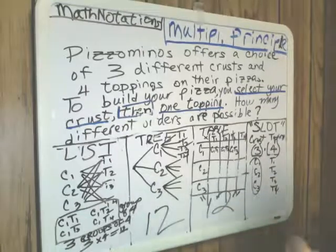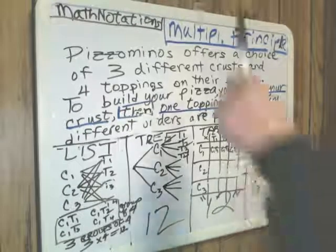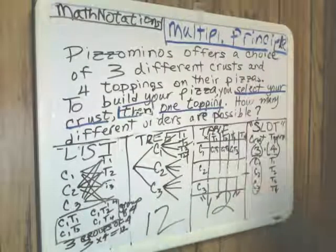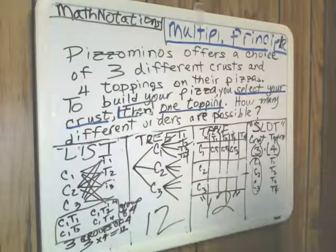I'm not going to write it out formally or tell you the most general form, which involves n events, but this gives you the basic idea. Visit my blog Math Notations. Thank you.